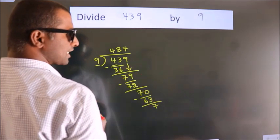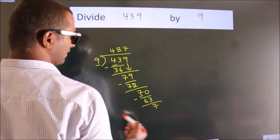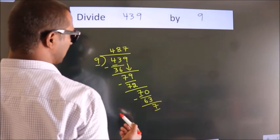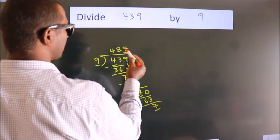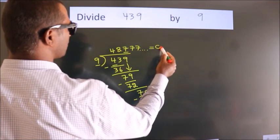Now you observe here we had 7 and we got 7 again. That means this number keeps on repeating. So this is our quotient.